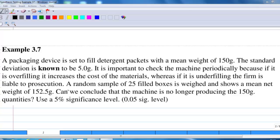A packaging device is said to fill detergent packets with a mean weight of 150 grams. The standard deviation is known to be 5 grams. It is important to check the machine periodically because if it is overfilling, it increases the cost of the materials, whereas if it is underfilling, the firm is liable to prosecution.